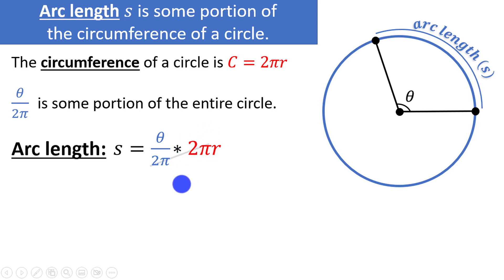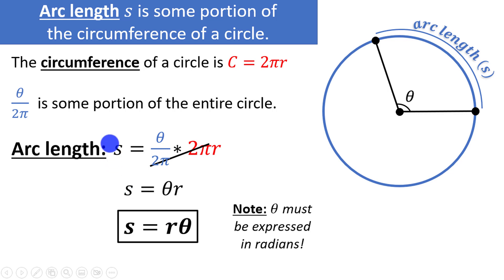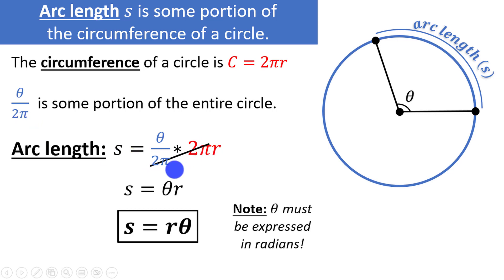This allows us to simplify. We cancel the 2π's and we're left with s = theta × r, or more commonly written s = rθ. Note that in order to use this formula, theta must be expressed in radians, because we used 2π in the denominator to derive it. Let's look at a few examples.